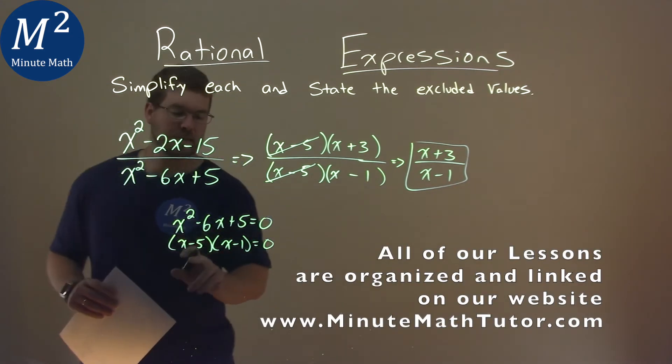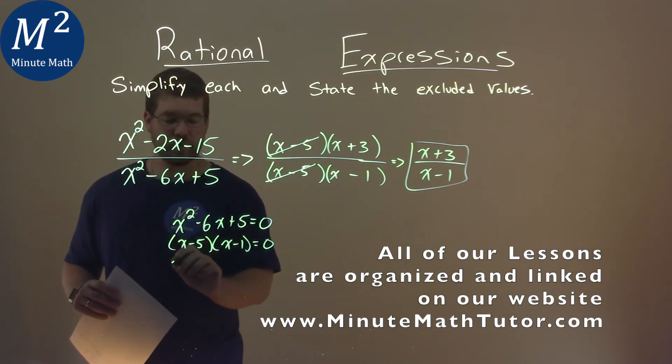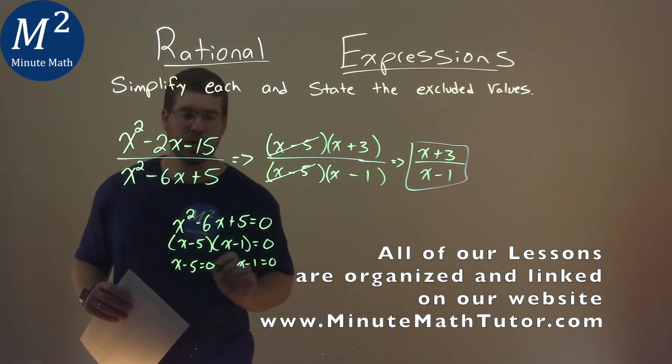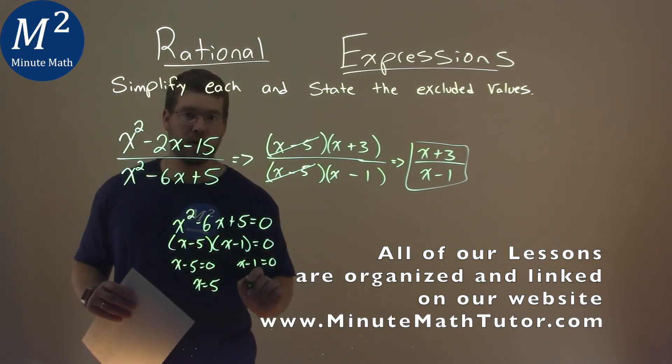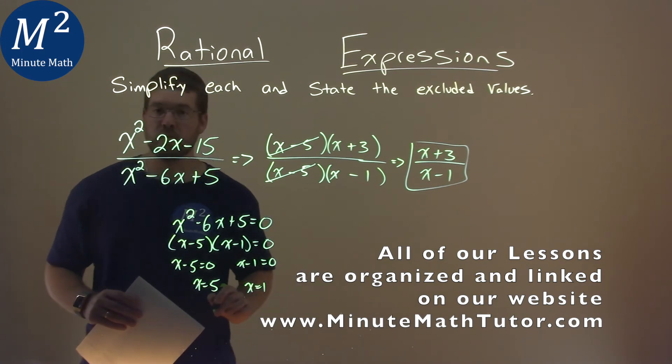Our rules state that we can set each part individually equal to 0. So x minus 5 equals 0, x minus 1 equals 0, and we're solving. Add 5 to both sides, x equals positive 5. Add 1 to both sides, x equals positive 1.